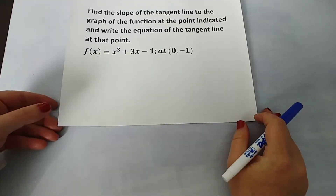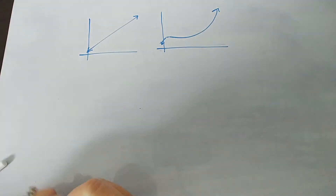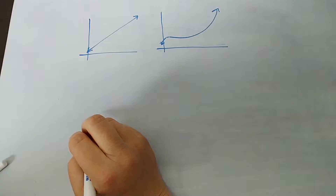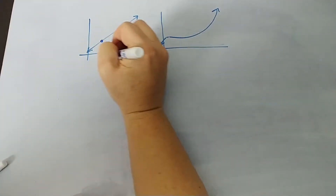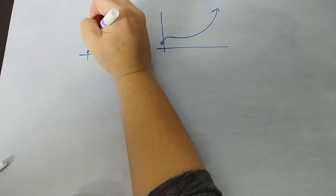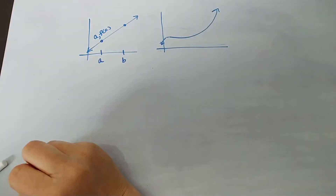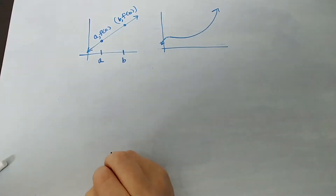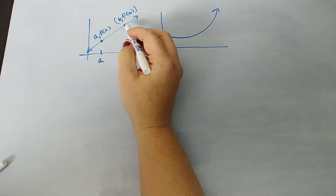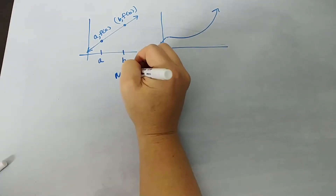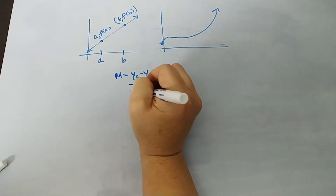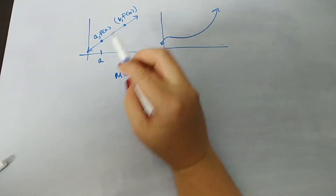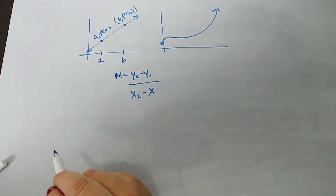Without going too much into the background of calculus, it is important to note that when you learned how to do the slope of a line in Algebra 1, even in eighth grade, you took two points — point A with coordinates (A, f(A)) and point B with coordinates (B, f(B)) — and you simply said slope was the change in Y over the change in X. And it didn't matter what two points you chose, because the definition of a linear function said that it had a constant rate of change.